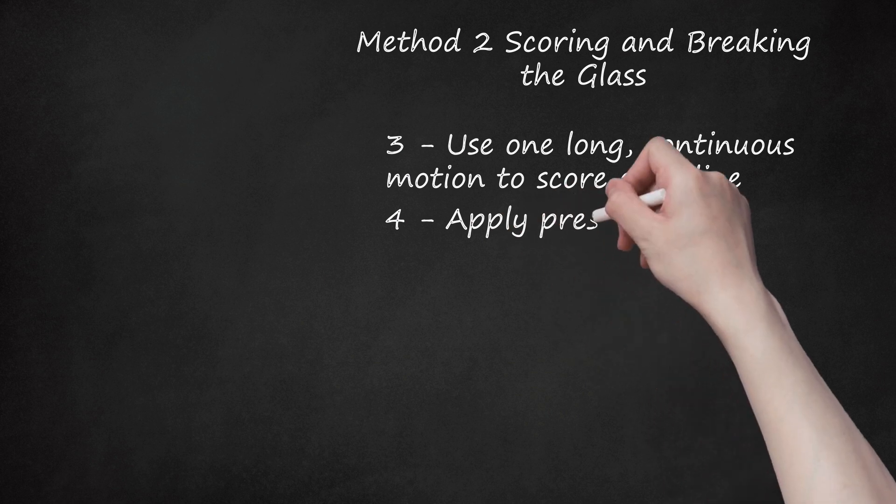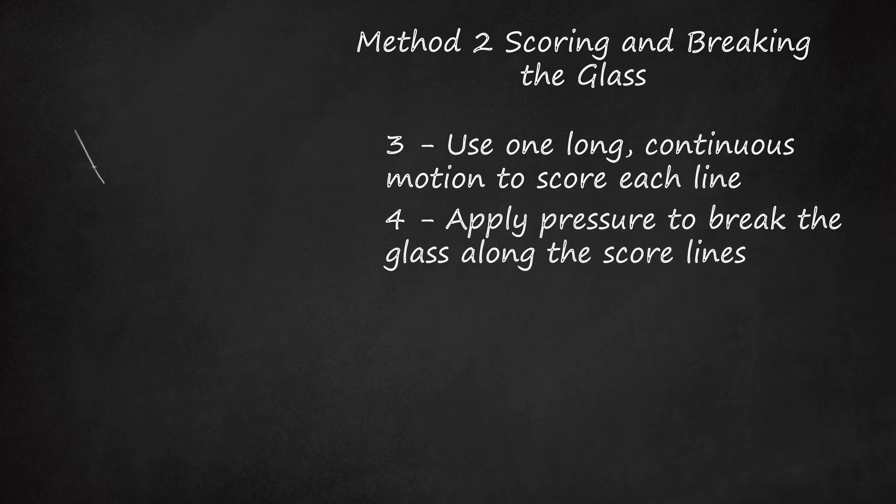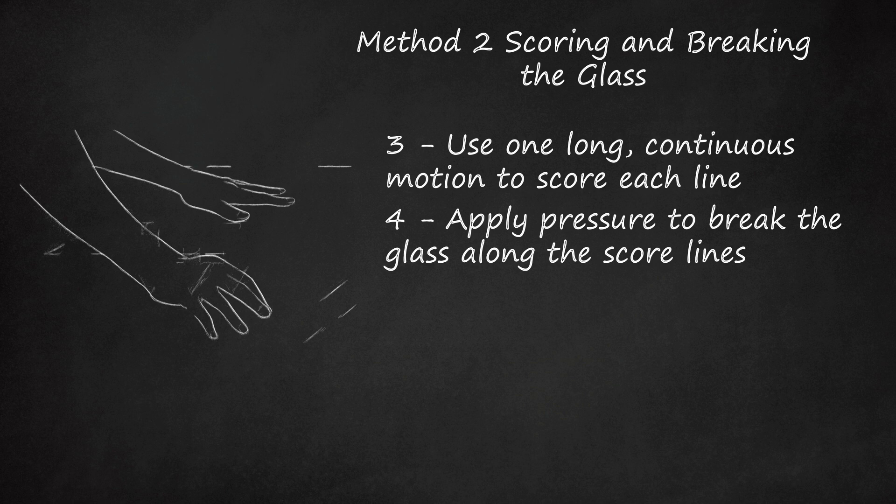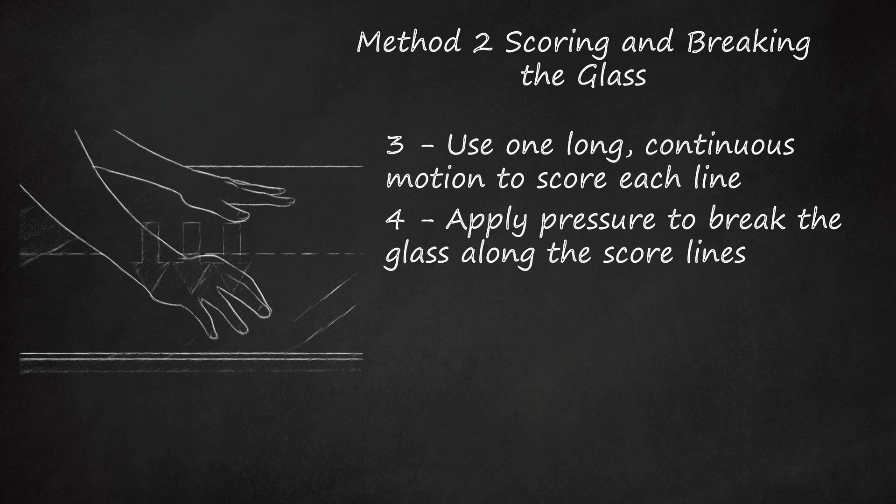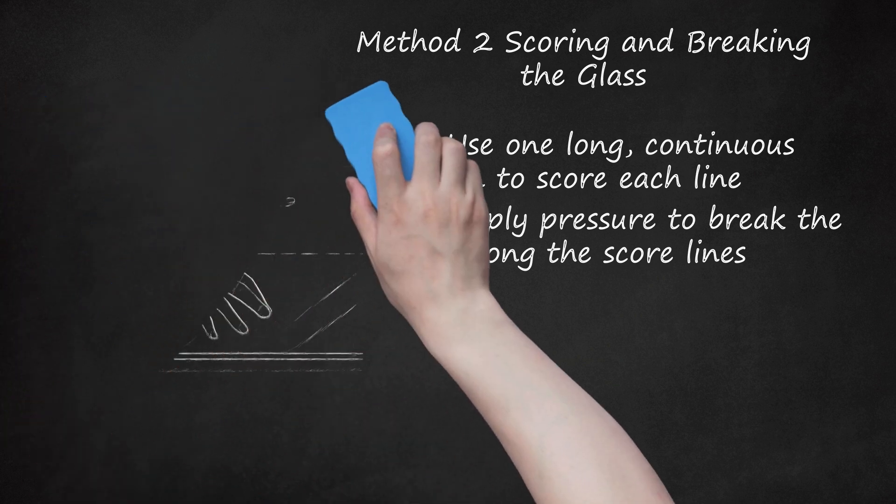Apply pressure to break the glass along the score lines. Place the scored glass on the edge of a hard surface, such as your workstation, making sure that the scored edge of the glass is directly aligned with the edge of the counter. Push down quickly on the part of the glass which is hanging off the workstation. It should snap off easily and cleanly in your hands. To make a clean break along curved score lines, it's best to use a pair of running pliers.